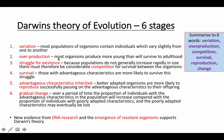Step 2: overproduction. Most organisms produce more young than will survive to adulthood — animals usually have loads of young and not all of them actually survive. Step 3: struggle for existence. Because populations do not gradually increase rapidly in size, there must be considerable competition — within the species and amongst everyone.